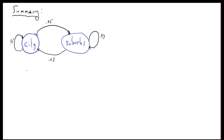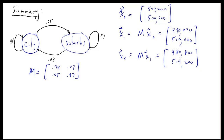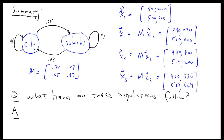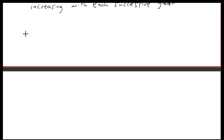In summary, here's the transition diagram, the corresponding migration matrix, the initial population vector, and the population vectors after one, two, and three years. The city population is decreasing and the suburb population is increasing with each successive year. The reason is straightforward: only 95% of city people stay versus 97% of suburban people, while 5% leave the city but only 3% return from the suburbs.